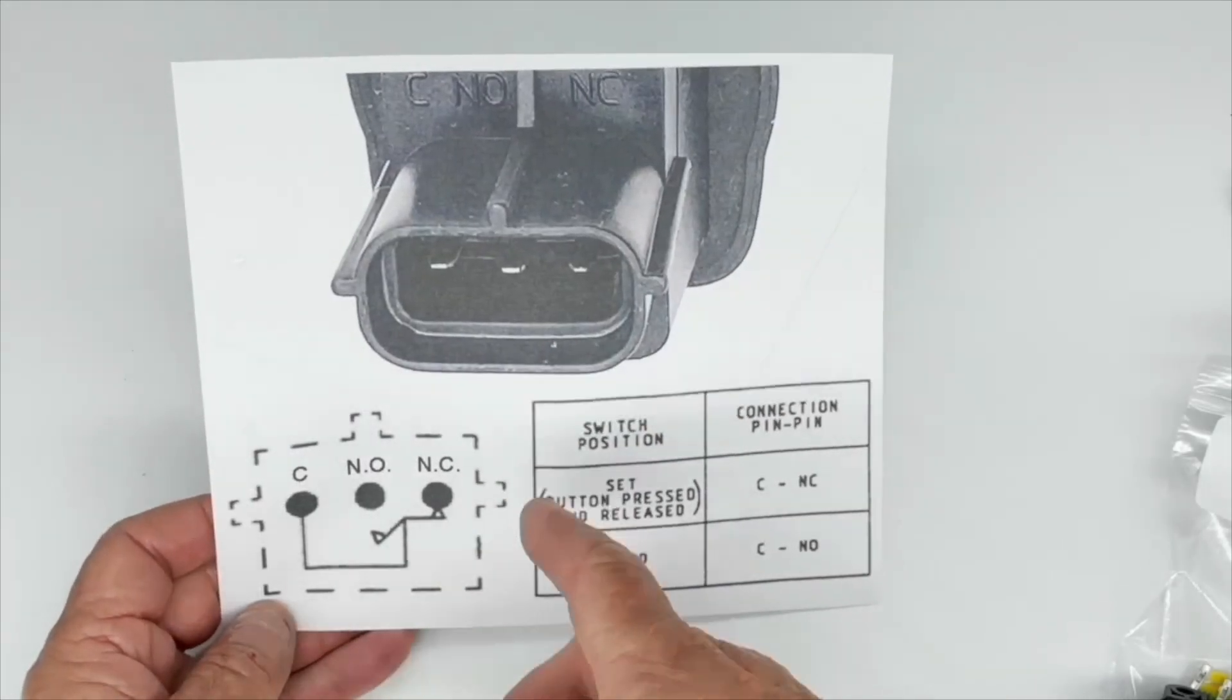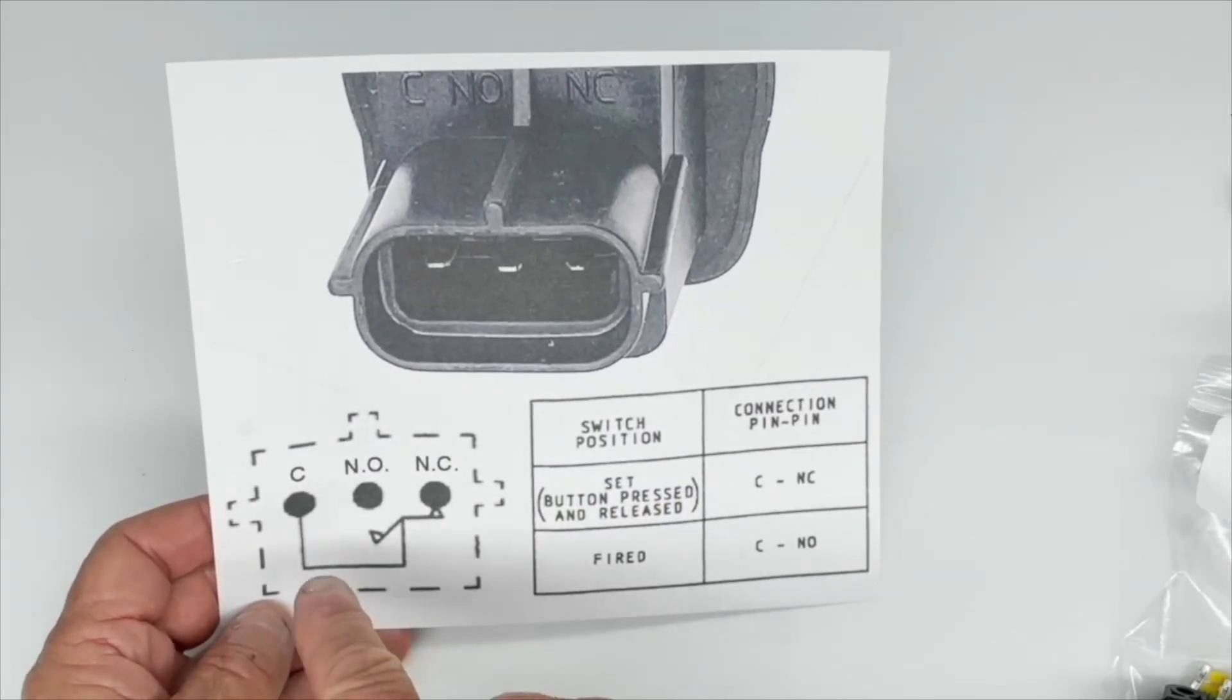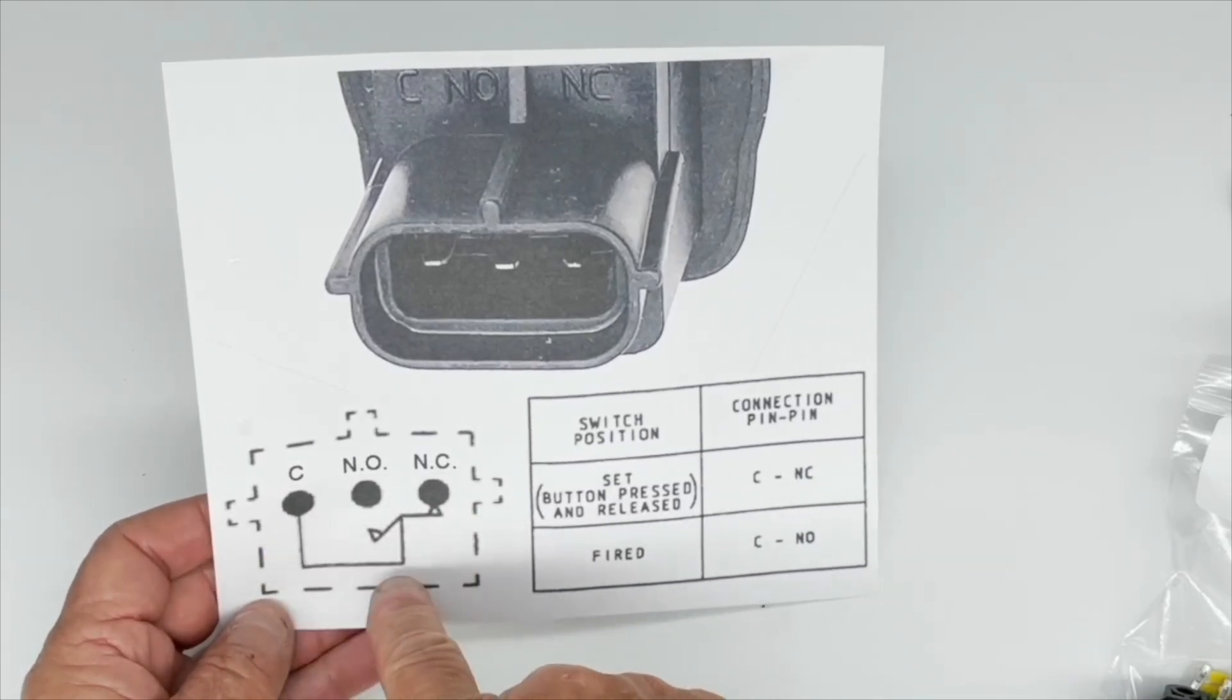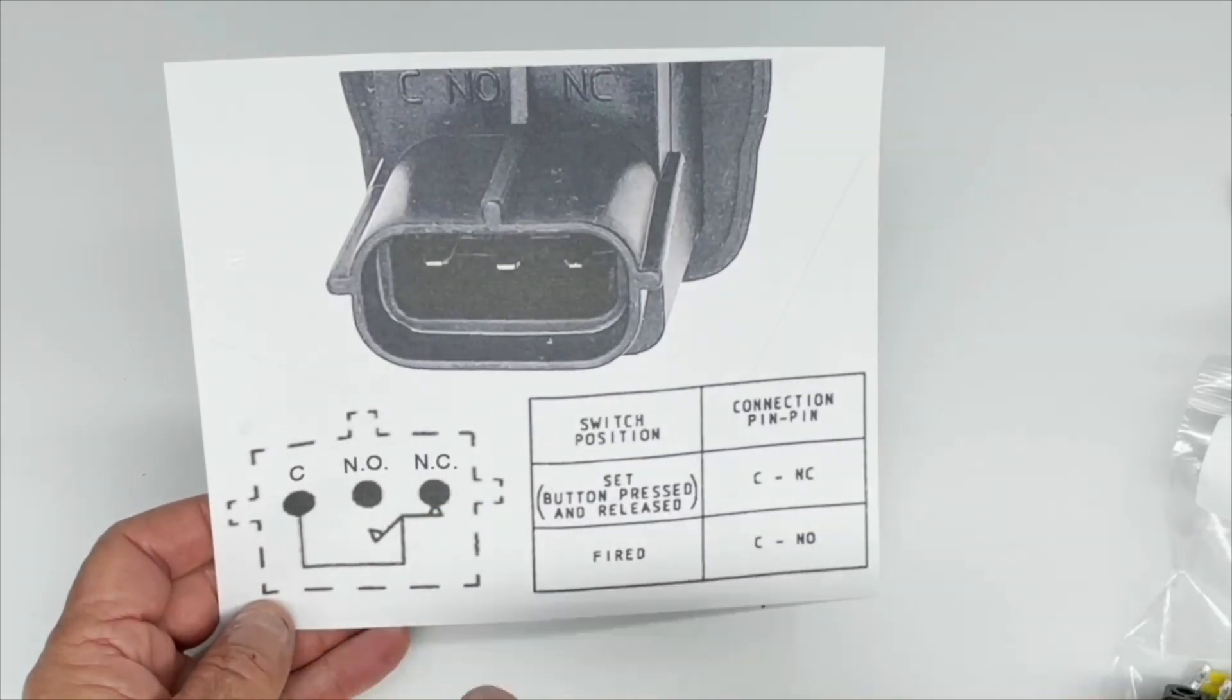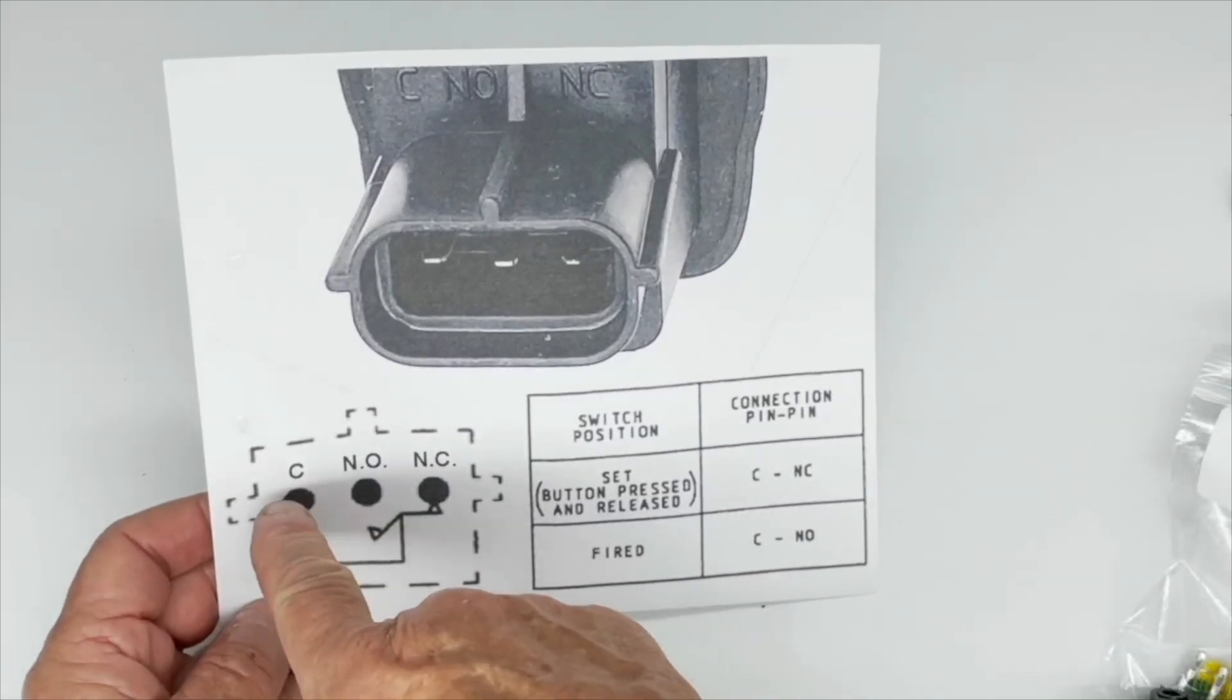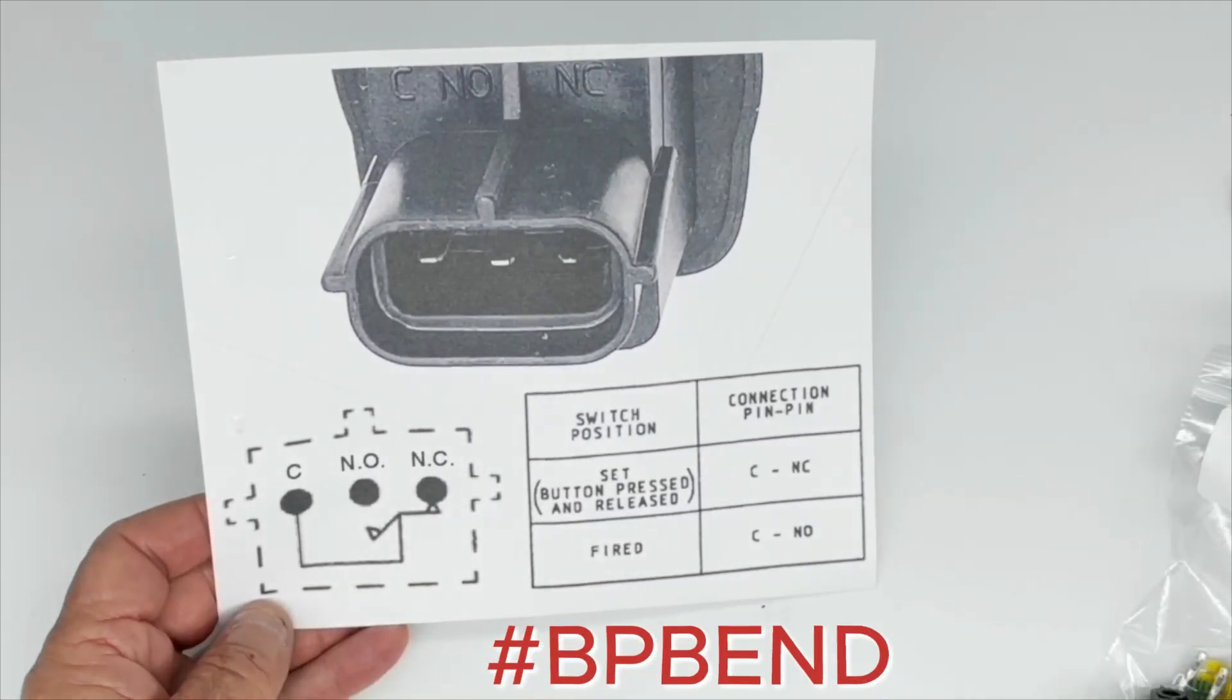So when the switch is armed and you've pressed the rubber diaphragm, there's contact between C and NC normally closed. In the event of a crash, the switch will flip and there will be contact between C and NO, the normally open terminal.